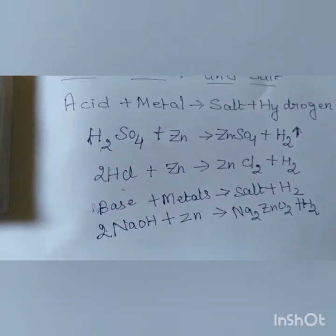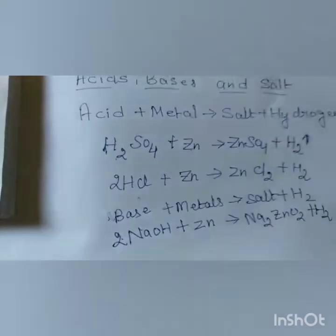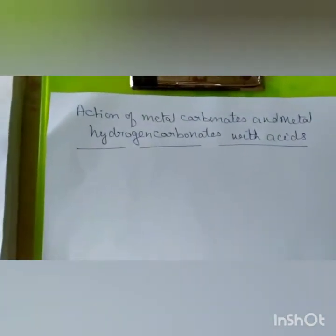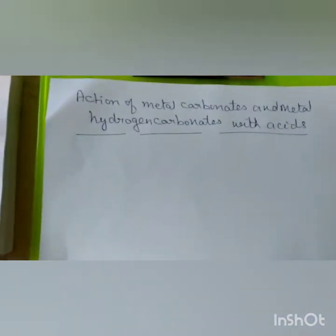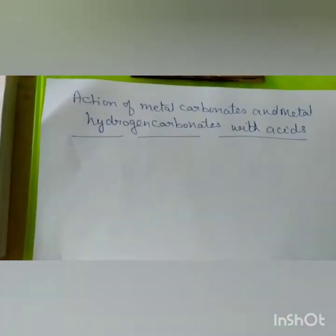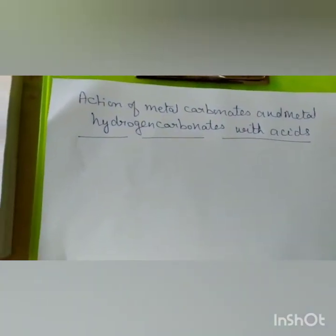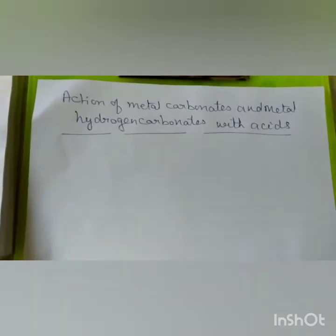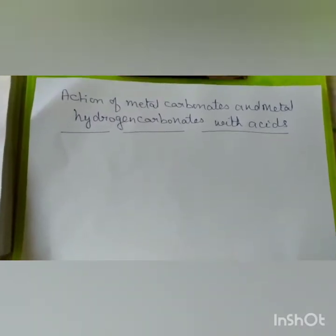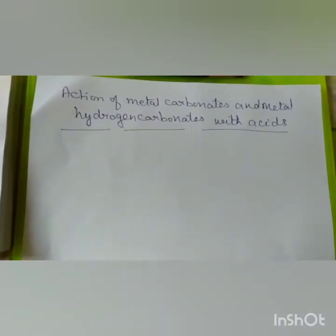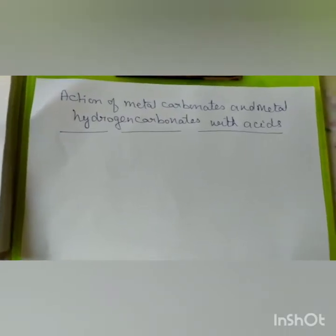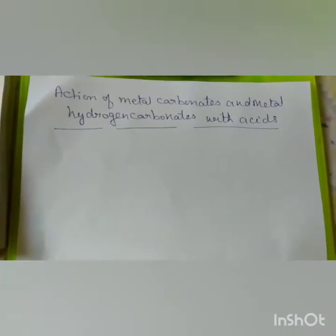This is the action of base with metals. In both cases — acid with metal and base with metal — you will get salt and hydrogen. Now we will study the action of metal carbonates and metal hydrogen carbonates with acids. How the acids react with metal carbonates and metal hydrogen carbonates. Please refer image 2 in the document.